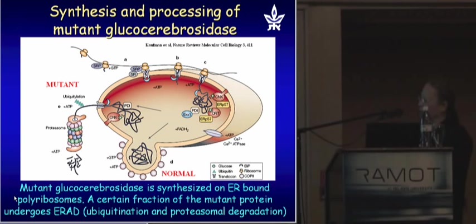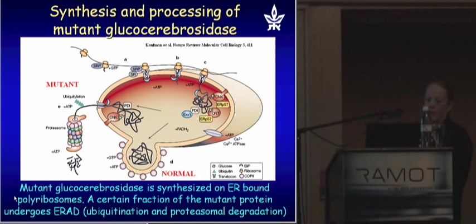The normal enzyme finds its way to the lysosome where it finds the substrate — glucosylceramide — and catalyzes the hydrolysis of the substrate, and everything is fine.